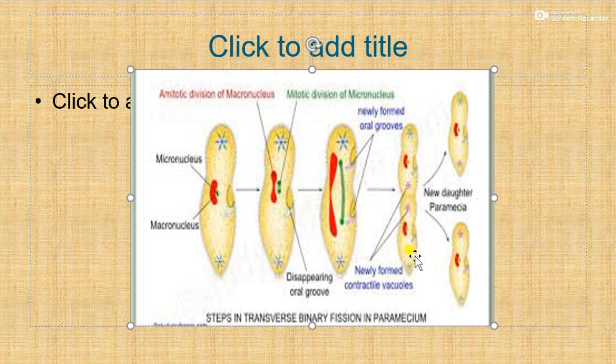Paramecium caudatum divides two to three times a day by binary fission. The process is completed in about two hours. All members of a clone are genetically identical.